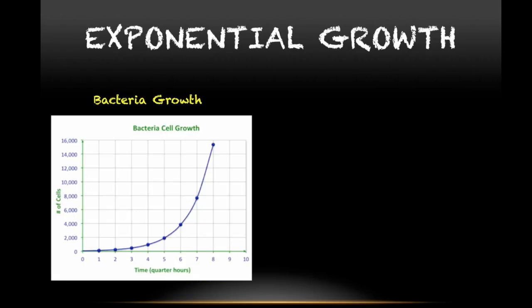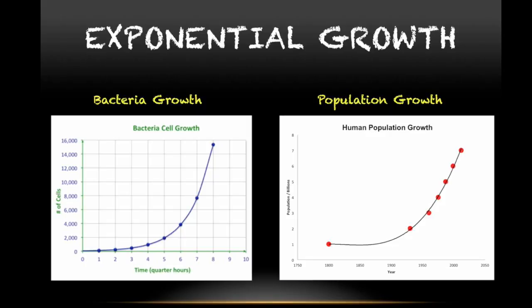Exponential growth is represented by graphs that start with small increments, but each time the increments become bigger and bigger. Examples of that could be bacterial growth, when we at the beginning have very small increments and then they become larger, and population growth, when again we see small increments at the beginning and then they become larger.